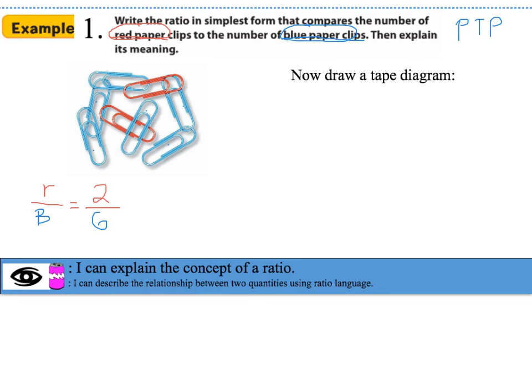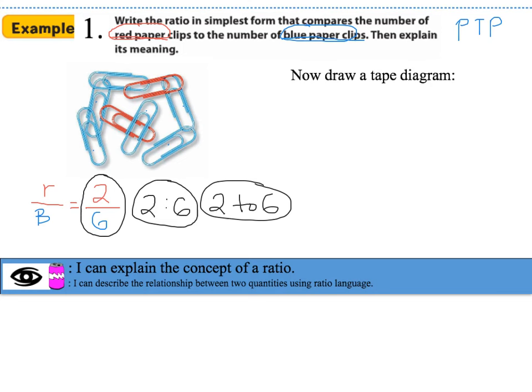I can write the ratio three ways: 2 over 6 as a fraction, 2 colon 6, or 2 to 6. Remember, we're dealing with fractions, so we always reduce. Dividing the top and bottom by 2, the reduced ratio is 1 over 3, or 1 colon 3, or 1 to 3. Always make sure you reduce your ratios.